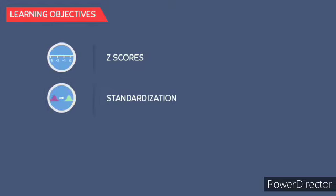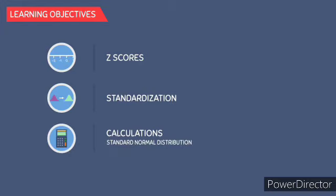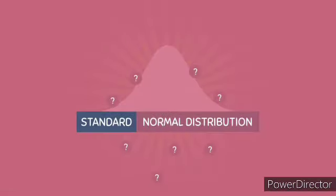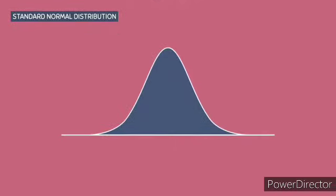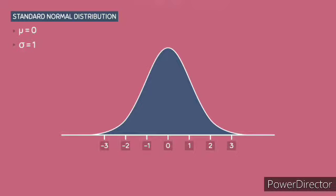In this video, we will be learning about z-scores and standardization. By learning about both of these topics, you will learn how to calculate exact proportions using the standard normal distribution. The standard normal distribution is a special type of normal distribution that has a mean of zero and a standard deviation of one. Because of this, it is always centered at zero and has intervals that increase by one.